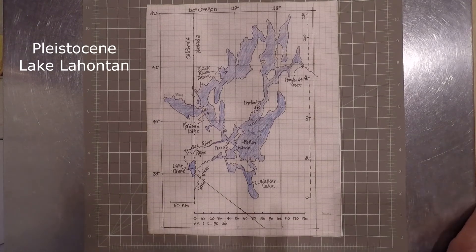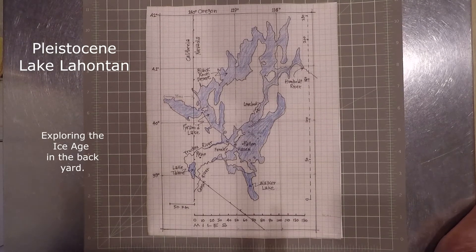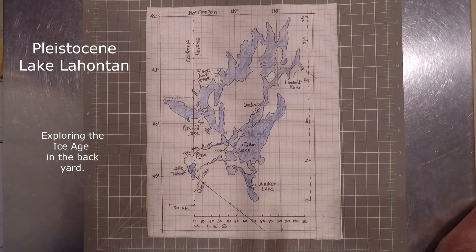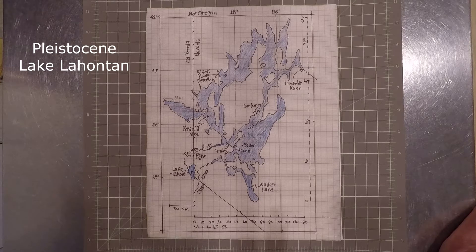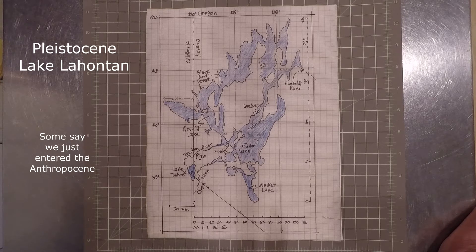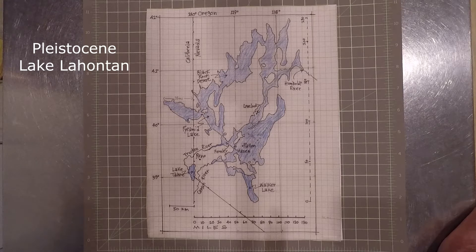This video shows some local features of Pleistocene Lake Lahontan in northwestern Nevada. This paleo lake was the result of the climate during the Wisconsin Age glaciation during the late Pleistocene epoch, from 75,000 years ago to 10,000 years ago. 10,000 years ago was the beginning of the Holocene epoch we presently live in.